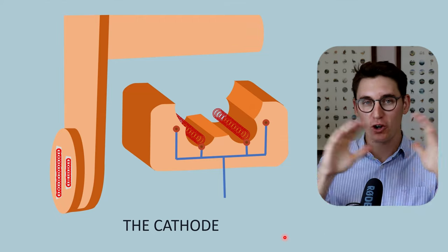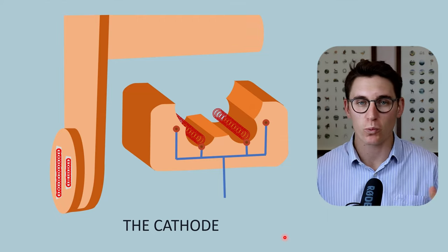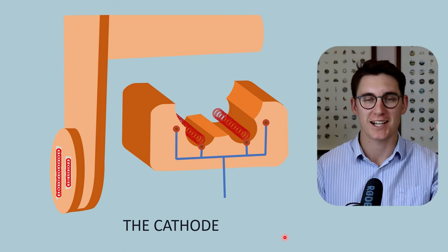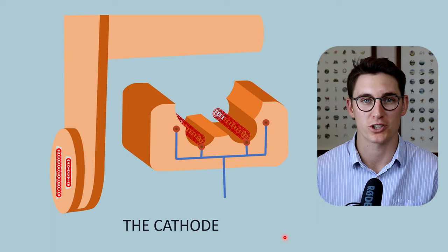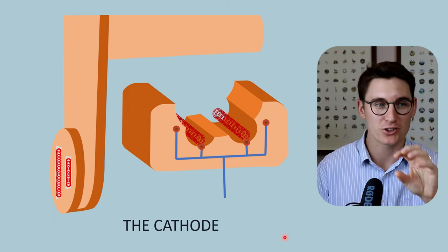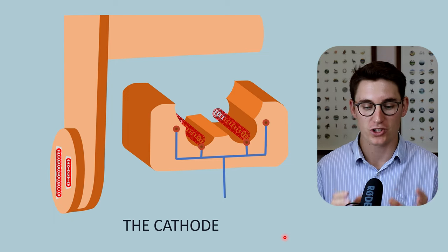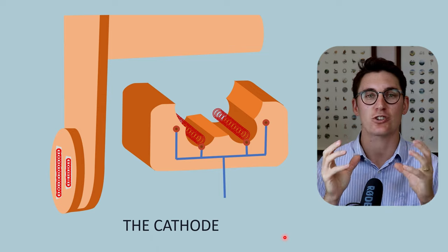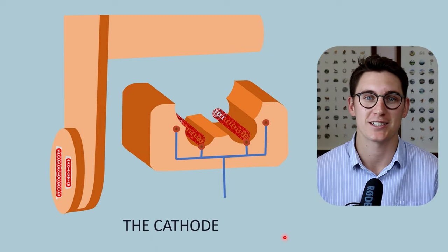In the last talk we went over a brief overview of the entire x-ray physics module. Don't worry if some of those concepts seem foreign to you and you're not exactly sure how the x-ray generation process works. We're going to take the next couple of talks to really dive deep into each of the various different components, and we're going to start by looking at the cathode, because that is where electrons are produced and those electrons are used to create our x-rays.